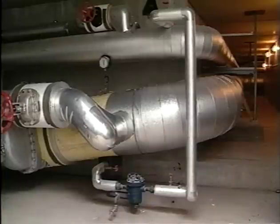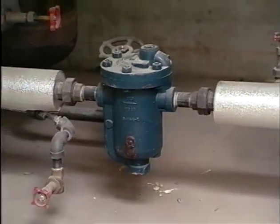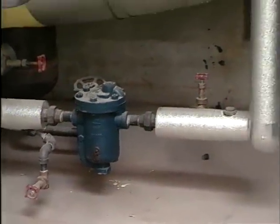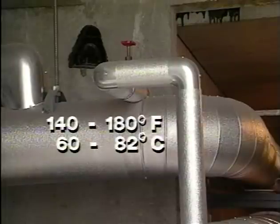One likely place for thermal shock to occur is in steam utility corridors. In these areas, the drip traps from high-pressure steam mains often discharge directly into the pumped condensate return lines. The temperature of the condensate in these lines usually ranges from 140 to 180 degrees Fahrenheit.